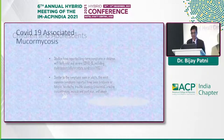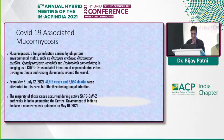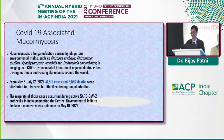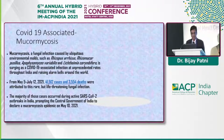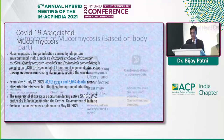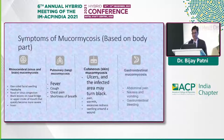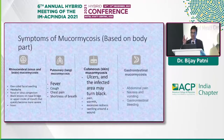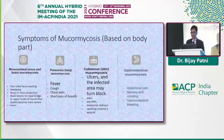Mucormycosis was a significant concern. From May 5 to July 12, 2021, there were 41,512 cases and 3,554 deaths — a huge mortality risk. Known as 'black fungus' in the media, the government declared a mucormycosis epidemic on May 10, 2021. Variants included rhino-cerebral, pulmonary, cutaneous, and GI mucormycosis. Rhino-cerebral mucormycosis caused the most catastrophe and brought this infection into public light.